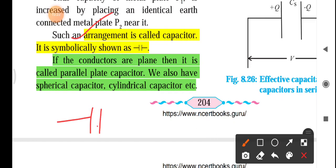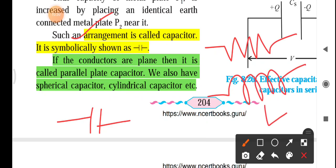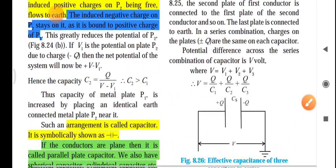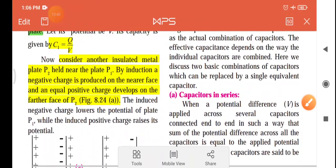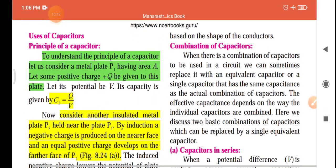This type of arrangement is called as the capacitor. It is symbolically given as this is the symbol of capacitor. We have seen this is the symbol of resistance and this is the symbol of inductance. These are the three things we have studied in the 11th class also. We will discuss the remaining things in the next lecture. Bye for now and have a nice day. Thank you everyone.